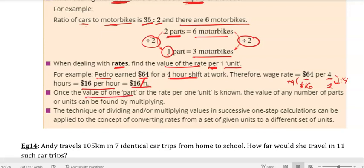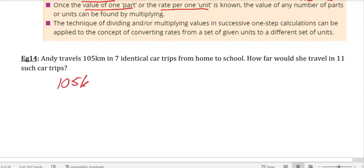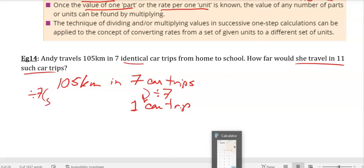So once you find the value of 1 part, the rate per unit is known. I'll just show you a few examples. Andy travels 105 kilometers in 7 identical, that's the key, so they're all equal, car trips. From home to school, how far would Andy travel in 11 such car trips? The first thing we need to do is figure out what the unit of one car trip is, and how did I get from 7 to 1? I divide it by 7. If I do the same on the other side, divide by 7, where's my handy calculator?